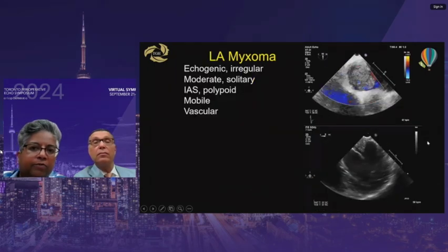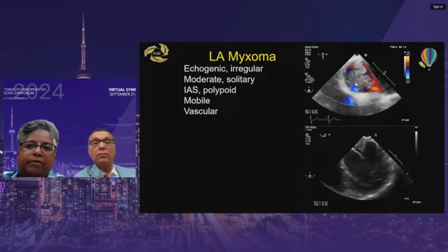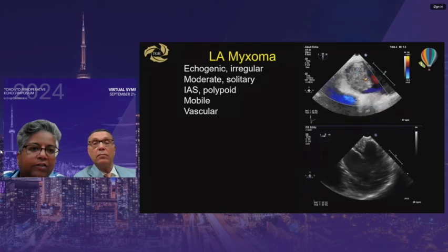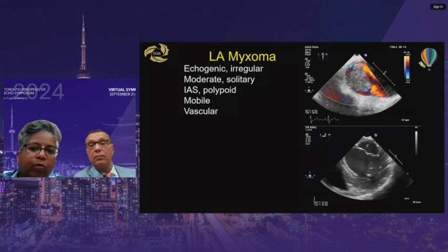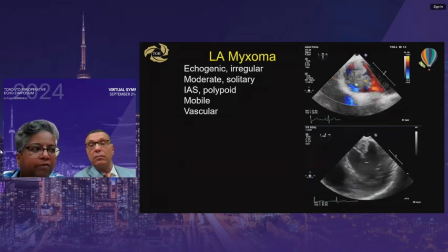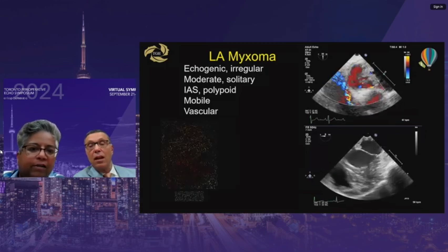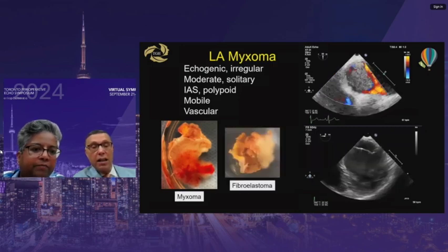This left atrial myxoma is shown with a reduced Nyquist limit, demonstrating vascularity within the tumor. It's moderate in size, solitary, involves the interatrial septum, and has a more irregular shape. The irregular shape is very important — fibroelastomas, which we think of as tiny tumors on the myocardium, can grow this large. Irregular tumors are much more dangerous in terms of embolization both pre-operatively and intraoperatively. Vascularity is also an important feature.